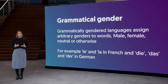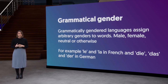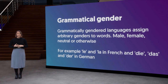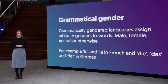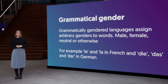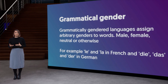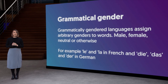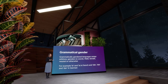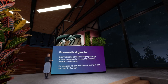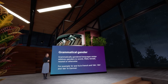Grammatical gender is furthermore something arbitrary, meaning it differs across languages. The sun is feminine in German but masculine in Spanish, while the moon, on the other hand, is masculine in German and feminine in Spanish.